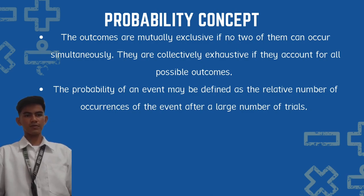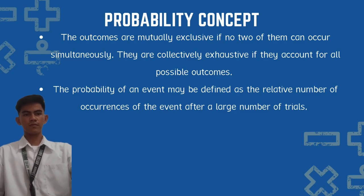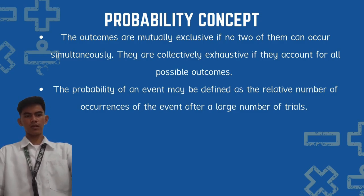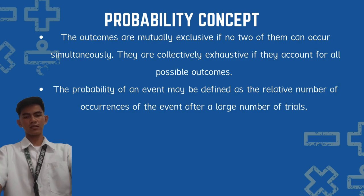Probability concepts: outcomes are mutually exclusive if no two of them can occur simultaneously, and collectively exhaustive if they account for all possible outcomes. The probability of an event may be defined as the relative number of occurrences over a large number of trials. In probability theory, mutually exclusive events cannot happen at the same time — for example, flipping a coin and getting heads and tails are mutually exclusive events.